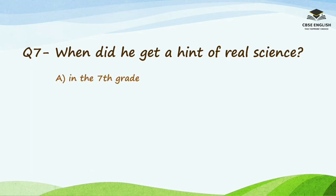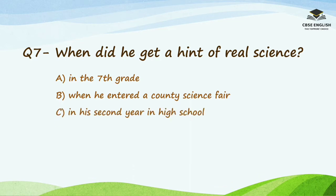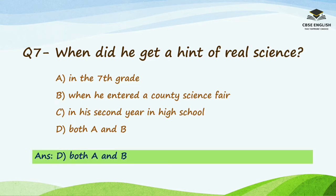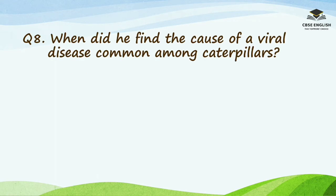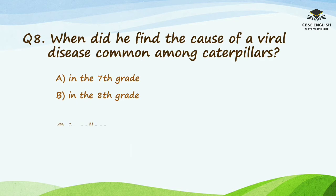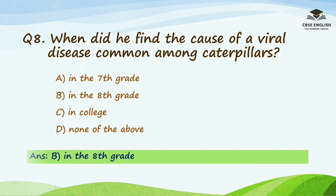Question number seven: when did he get a hint of real science? Options are in the seventh grade, when he entered a county science fair, in his second year in high school, or both A and B. The right option is both A and B — that is, in the seventh grade and when he entered a county science fair. Question number eight: when did he find the cause of a viral disease common among caterpillars? Options are in the seventh grade, in the eighth grade, in college, or none of the above. The right answer is in the eighth grade.